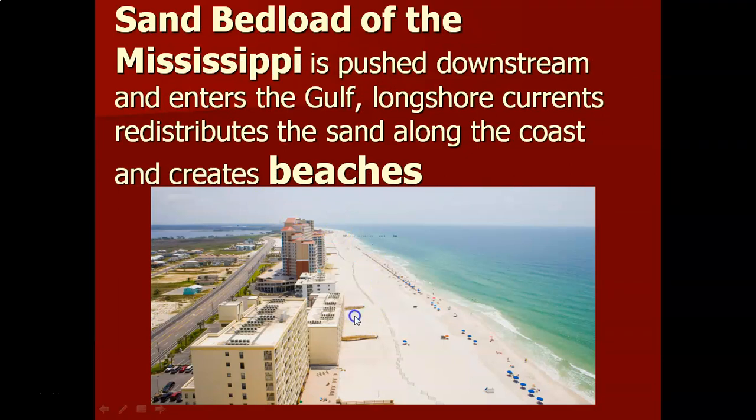The Mississippi River has a sand bed load being pushed along its course of over 2,000 miles until it reaches the Gulf of Mexico, where it's redistributed along the coast by waves, tides, and currents. So where do beaches come from? It is the bed load of rivers. In this case, sand bed load — but you can also have cobble beaches from cobble bed load rivers.